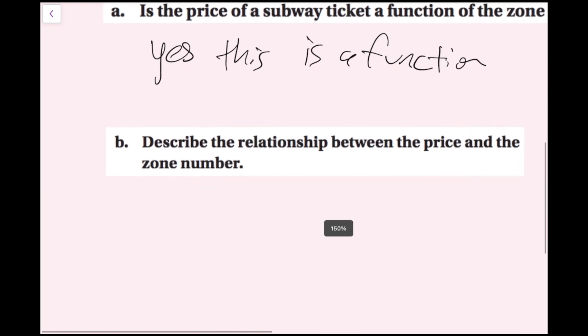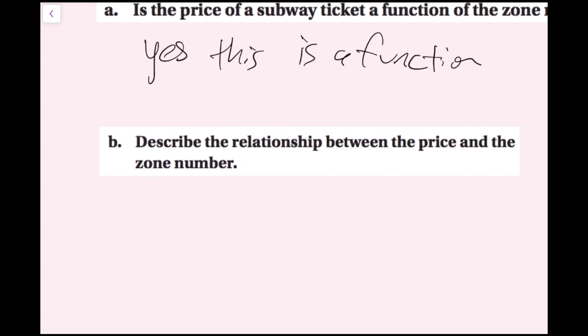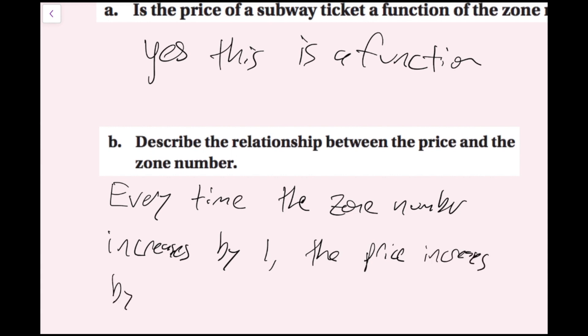So describe the relationship between the price and the zone number. Every time the zone number increases by 1, the price increases by $1.50. Now, because this has a constant rate of change, this is actually going to be a linear relationship. If we were to graph that, it would all be on one line. Anyway, we've answered our question successfully, and now we're done.